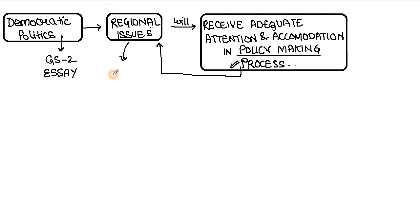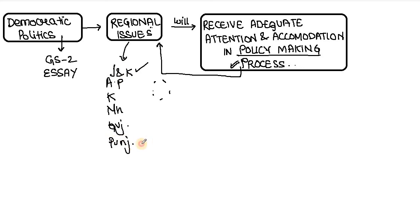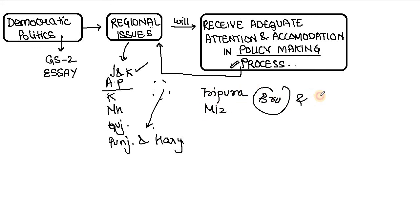These regional issues have been seen in the case of Jammu and Kashmir, Andhra Pradesh, Karnataka, Maharashtra, and Gujarat. In some parts of Southern India, there were protests against making Hindi the official language of the country — this was recently in the news. There are also issues related to redrawing the internal boundaries of the country. For example, in Punjab and Haryana there are always boundary disputes. In Northeast states such as Tripura and Mizoram, the Bru and Reang community faces boundary-related and citizenship-related issues.